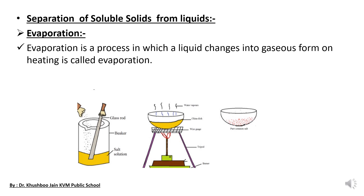The first method is evaporation. Evaporation is the process in which a liquid changes into gaseous form on heating, and this process is known as evaporation. You can see this in the diagram.